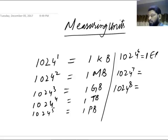And then 1024 to the power eight equals to 1 yottabyte. So now this way you have seen how the memory sizes are calculated differently.